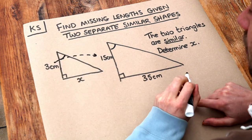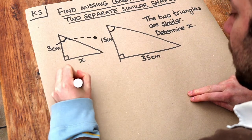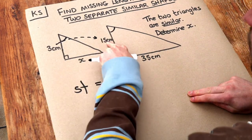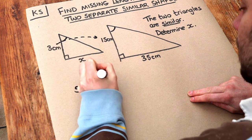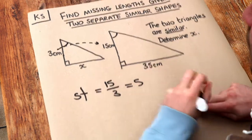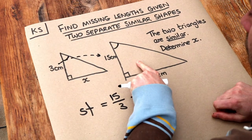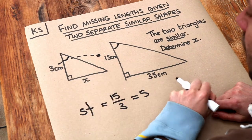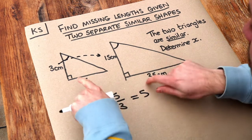So we can find the scale factor—I use SF for scale factor. We just do that second length divided by the first, and 15 divided by 3 is 5. And that's telling you that the second triangle, all the lengths are five times bigger than the first triangle.